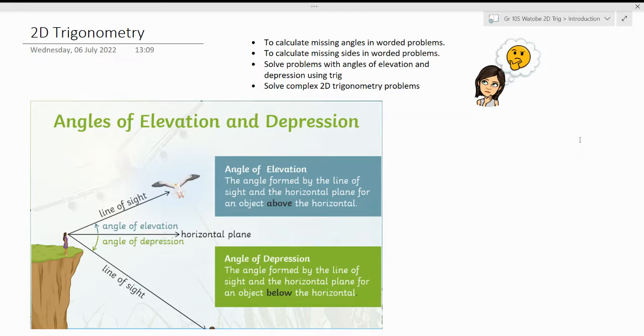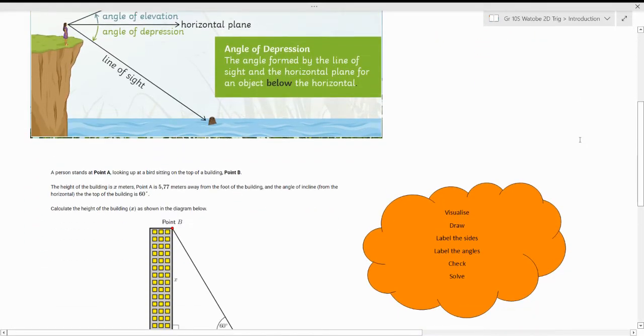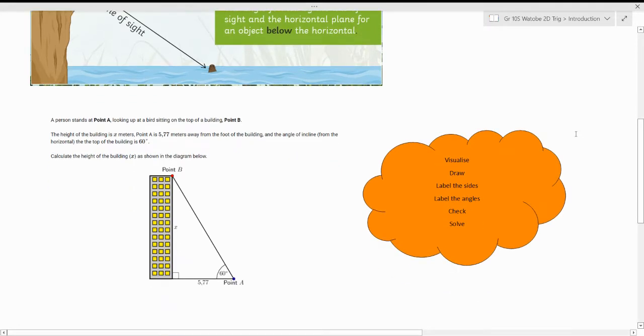In the course we're going to develop the skills needed to interpret the problem and develop some strategies to help you interpret and solve the problem such as visualizing the problem, drawing it, labeling the sides and angles correctly, checking your working, and then using the correct trig ratio to solve the problem.